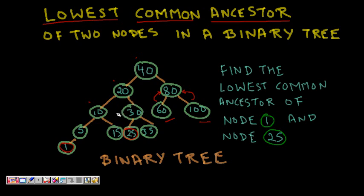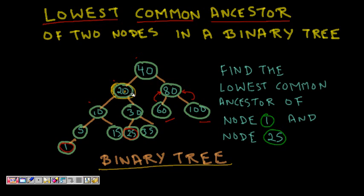Let's find the lowest common ancestor of node 1 and 25. For 25, the ancestors are 30, 20, and 40. For 1, the ancestors are 5, 10, 20, and 40. So the lowest common ancestor is node 20. We are dealing with a general binary tree — even though the example looks like a binary search tree, any values can be anywhere.